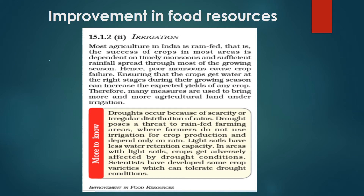Here, yield means production. Therefore, many measures are used to bring more and more agricultural land under irrigation. Irrigation is required because sometimes rain does not come on time, so depending on when we require water, we can manually distribute water to the crop so that our crops do not face failure.